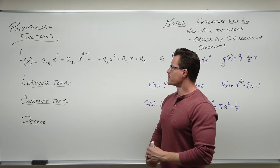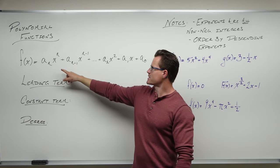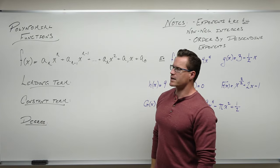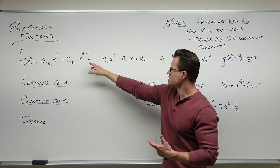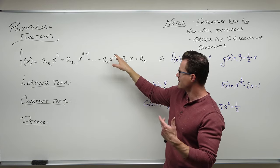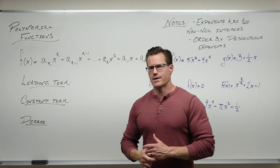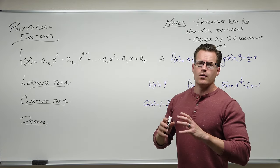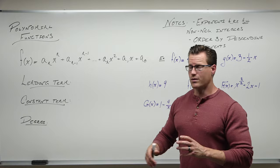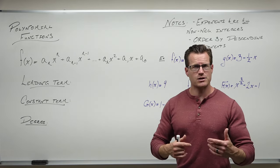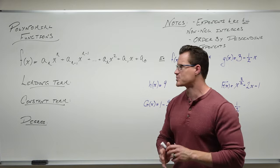I want you to notice that these a's have different subscripts and they match these exponents. The exponents are n, n minus 1, n minus 2, and then all the way down until you get to 2, 1, and then no exponent above an x at the very end, which is a constant term. That's how we want to structure our polynomials — we want them in order. Exponents need to be in descending order, so you want your biggest exponent first.